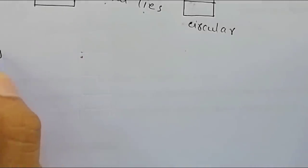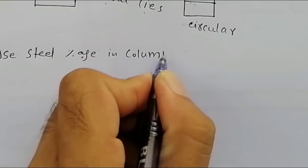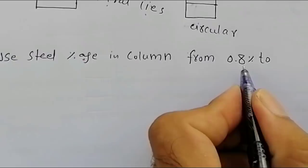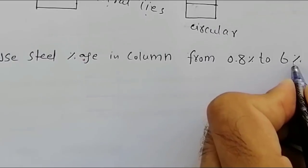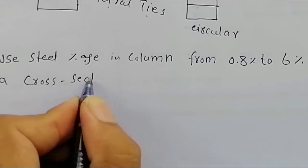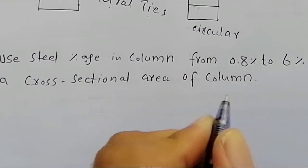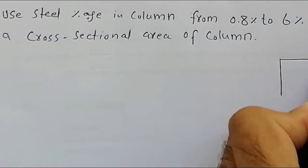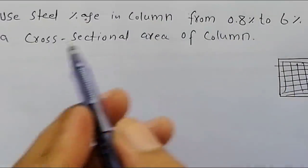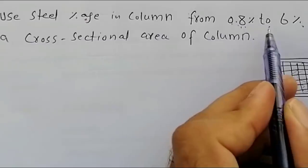Remember that: use steel percentage in column from 0.8% to 6%. Percentage of steel in column is of cross-sectional area of column. How? For example, this is called the cross-sectional area of column. You will use steel quantity in column, in RCC column, 0.8% to 6% of cross-sectional area of column. We will use 0.8% to 6%.